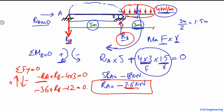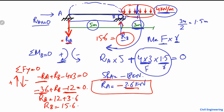Solving for RB: shifting the values to the right side gives RB = 12 + 3.6, so RB = 15.6 kN. Therefore, the reaction at support B is 15.6 kN upward and the reaction at support A is 3.6 kN downward.